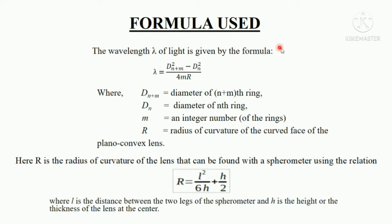The formula of wavelength of light after customizing it for our situation becomes λ = (d²ₙ₊ₘ - d²ₙ) / 4mR where dₙ₊ₘ is the diameter of n+mth ring, dₙ is the diameter of another ring, where m is an integer number which can be considered anything like 2, 4, 3, anything.